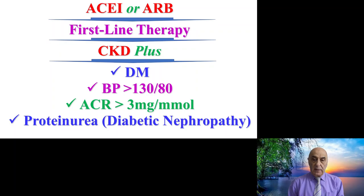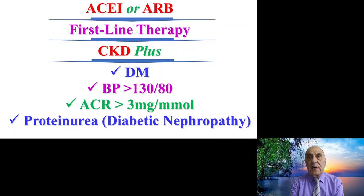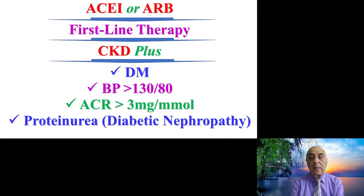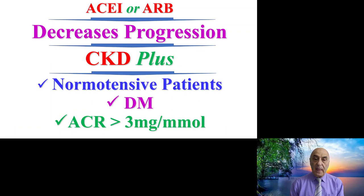The angiotensin converting enzyme inhibitor or angiotensin receptor blocker is considered first-line therapy in patients with chronic kidney disease who are also suffering from diabetes mellitus, and whose blood pressure is above 130/80, and whose ACR is above 3 mg per mmol, or who are suffering from proteinuria or diabetic nephropathy. The ACEi or ARB can decrease the progression of CKD in patients who are diabetic and who have an ACR above 3 mg per mmol.